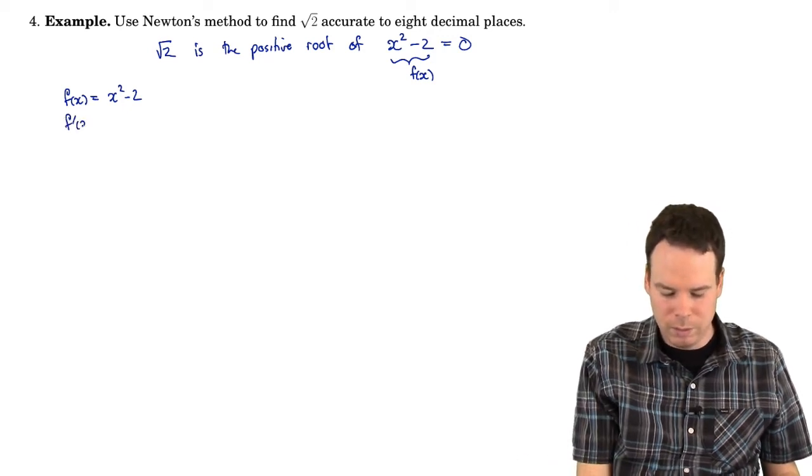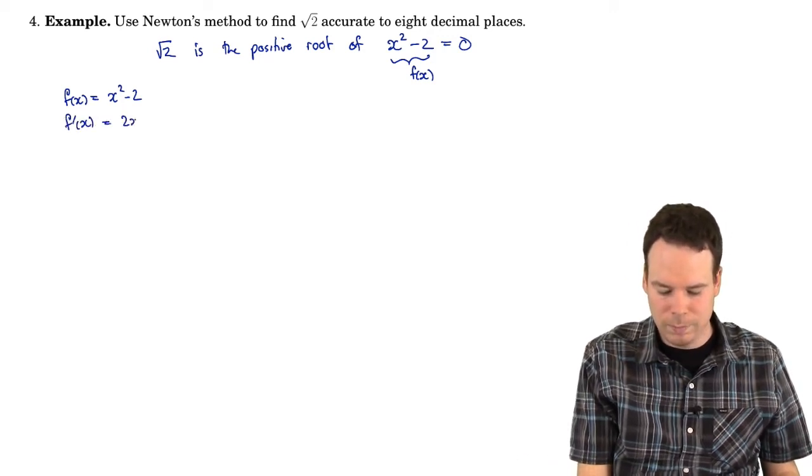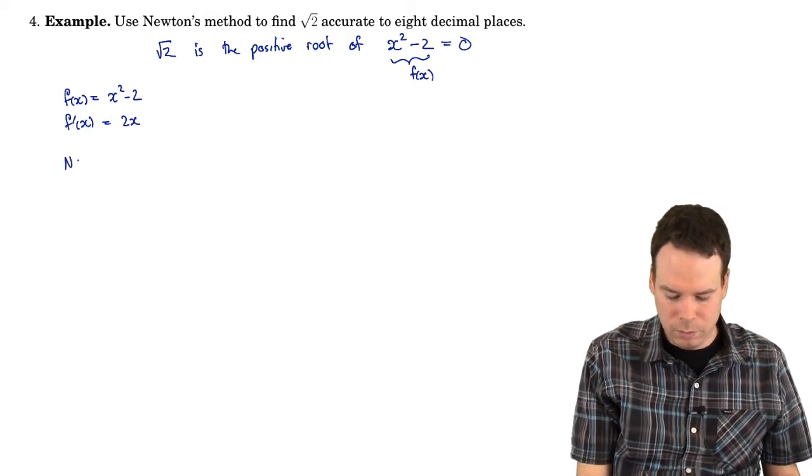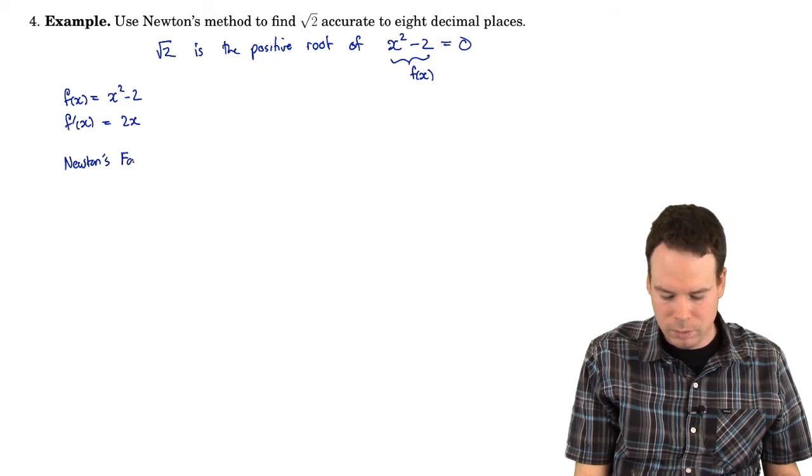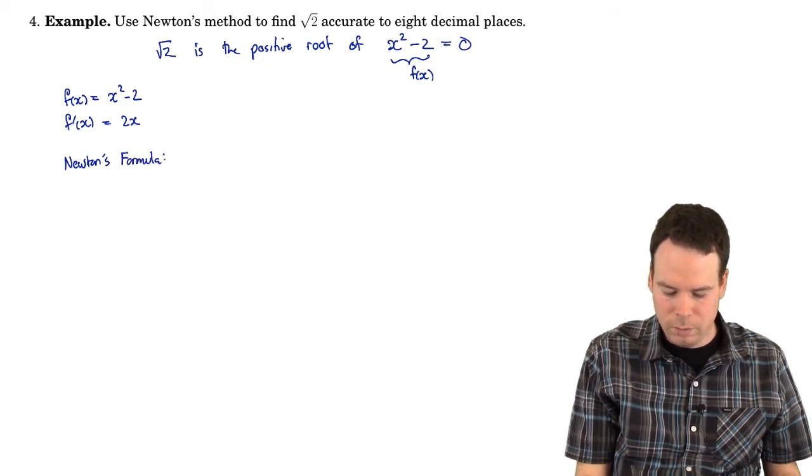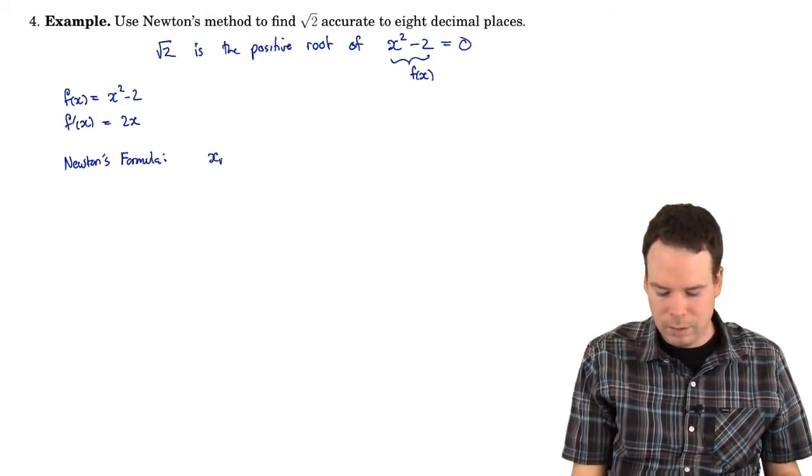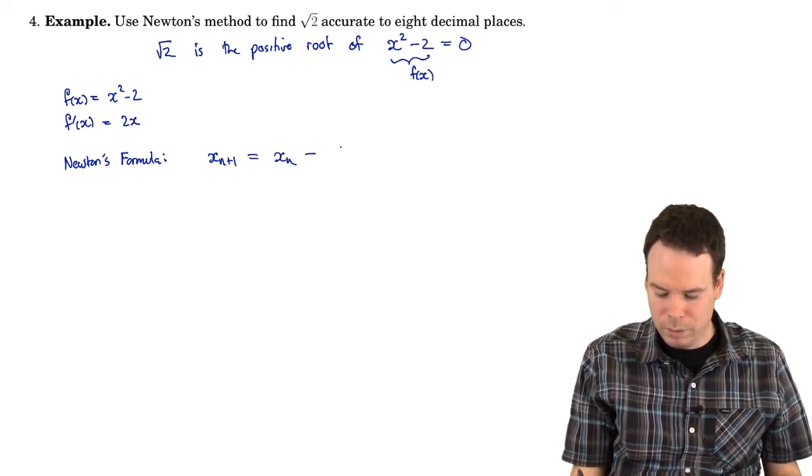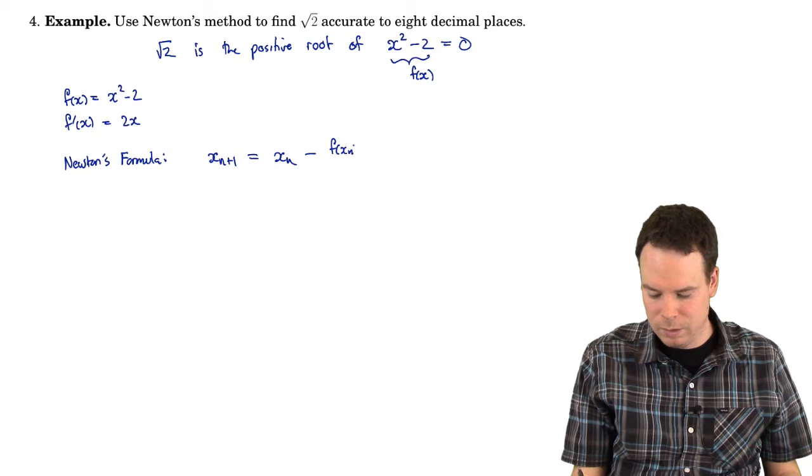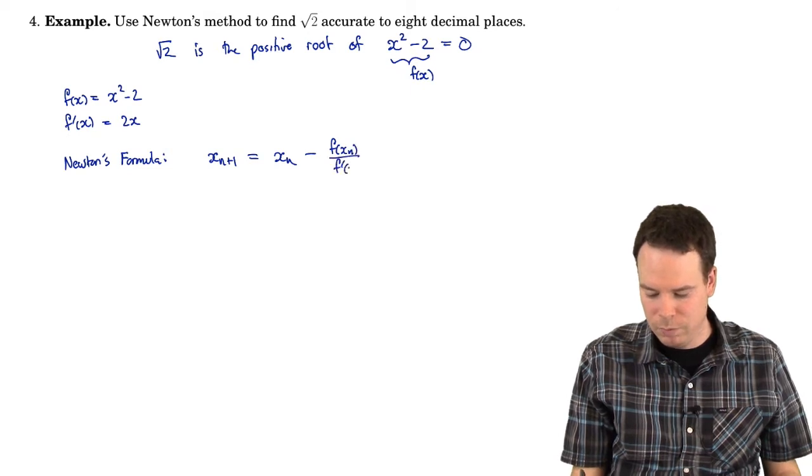We're going to use Newton's method. So we need to know its derivative. And then we're going to use Newton's iterative formula. So what's Newton's iterative formula? Well, it says you can get the next approximation by taking the previous one and subtracting off f of x_n over f prime of x_n.